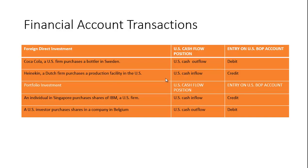Here are some examples. For foreign direct investment: Coca-Cola, a US firm, purchases a bottler in Sweden — that's a US cash outflow and recorded as a debit. Heineken, a Dutch firm, purchases a production facility in the US — that's a US cash inflow and recorded as a credit. For portfolio investment: an individual in Singapore purchases shares of IBM, a US firm — that's a US cash inflow and recorded as a credit. A US investor purchases shares in a company in Belgium — that's a US cash outflow and recorded as a debit.